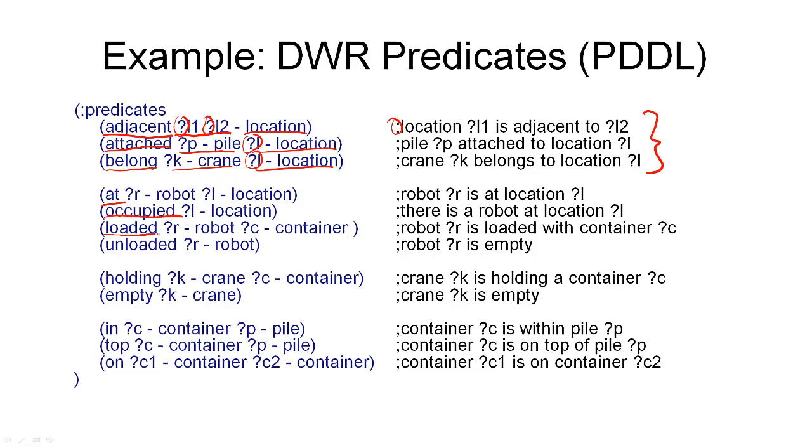Then we have the loaded relation, which tells us whether there is a container loaded onto a robot or which container is loaded onto a robot. And unloaded is true if a robot is not loaded with a container. Then we have a holding relation, which tells us which container is held by a crane. And we have an empty relation, which is true if and only if the crane is not holding a container.